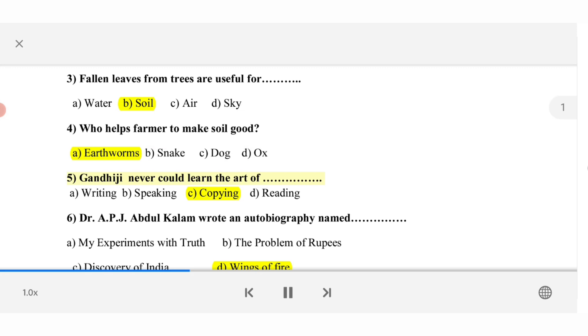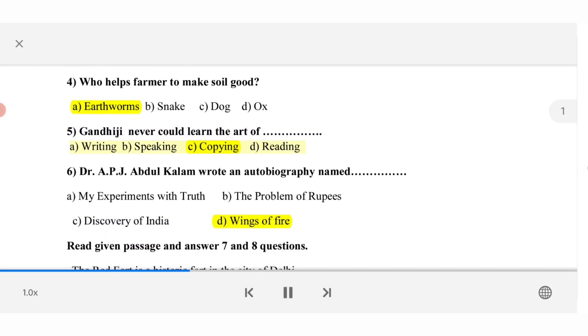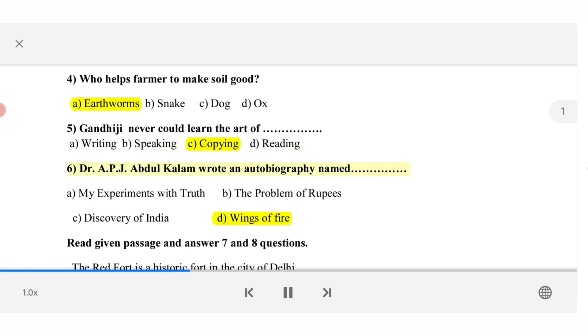5. Gandhiji never could learn the art of. A. Writing. B. Speaking. C. Copying. D. Reading. 6. Dr. A.P.J. Abdul Kalam wrote an autobiography named. A. My experiments with truth. B. The problem of rupees. C. Discovery of India. D. Wings of fire.